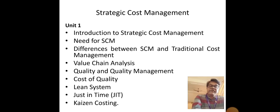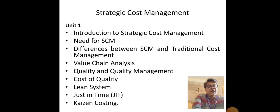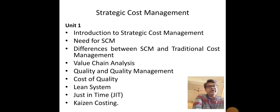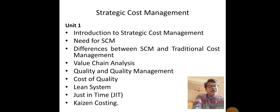The next component is value chain analysis. Value chain is a process in which the value of a product or service is added at each and every stage of manufacturing or service delivery. For example, procuring raw material from a supplier, converting it into finished goods, packing it, and delivering it to the end user. In all these stages, the value of the product is to be improved. Value chain analysis identifies areas where we can improve product value and reduce various cost elements.